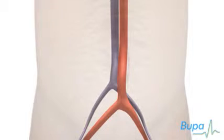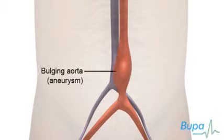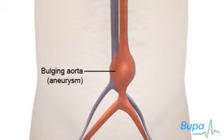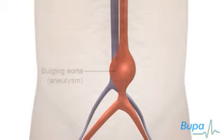As the aneurysm is weaker than a normal artery wall, it may not withstand the pressure of blood inside. This may cause it to rupture or burst.